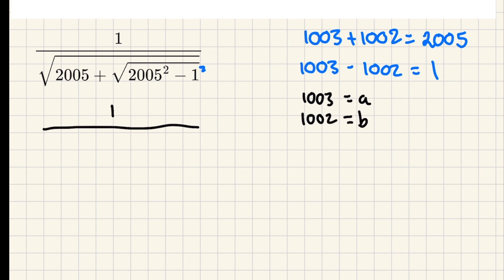And then I can rewrite this whole thing. It can be one over the square root of a plus b, plus the square root of (a plus b) squared minus (a minus b) squared.